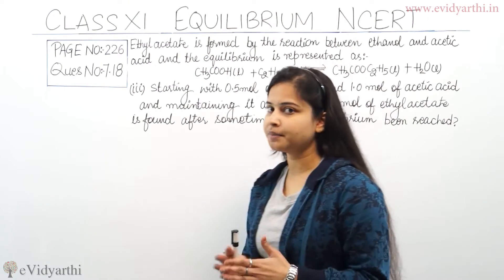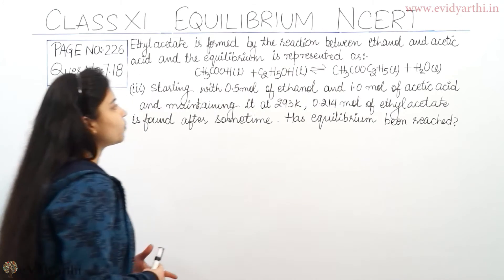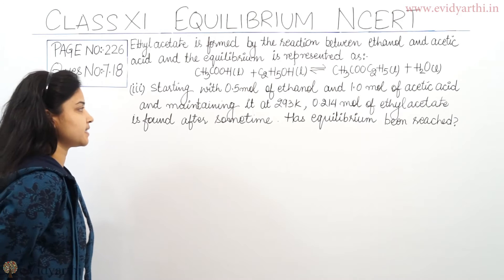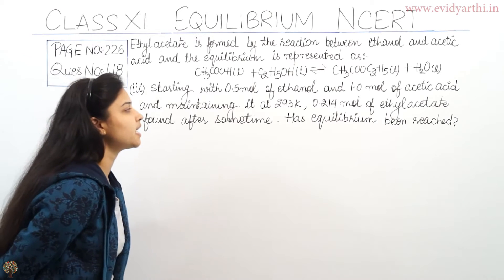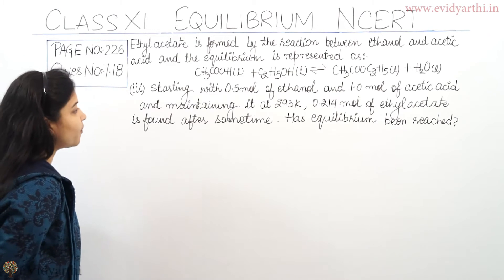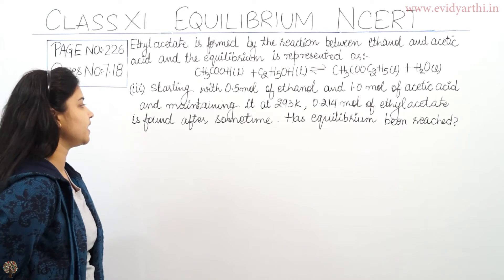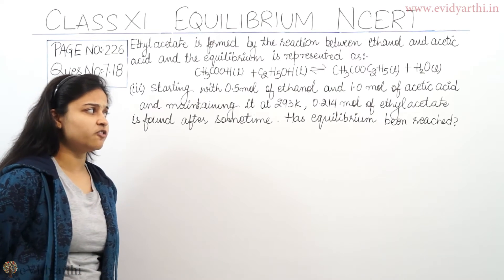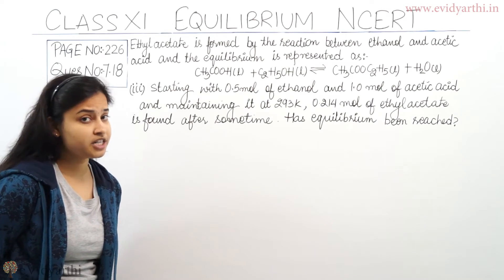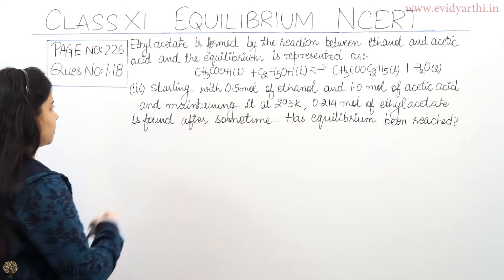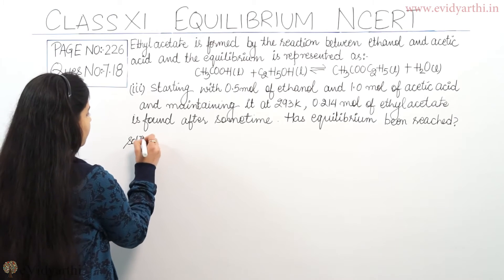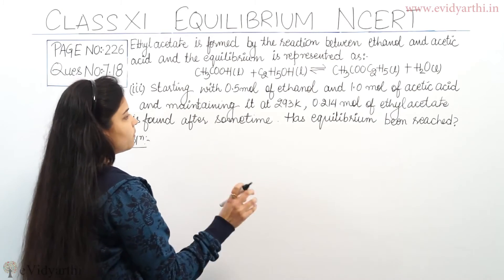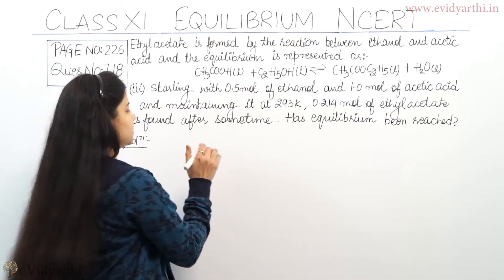The third part of the question is: starting with 0.5 mol of ethanol and 1 mol of acetic acid and maintaining it at 293 Kelvin, 0.214 mol of ethyl acetate is found after some time. Has equilibrium been reached? Let's find out. Let the volume of the reaction mixture be V.